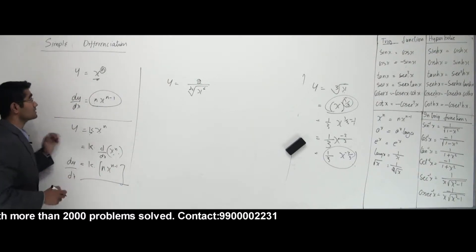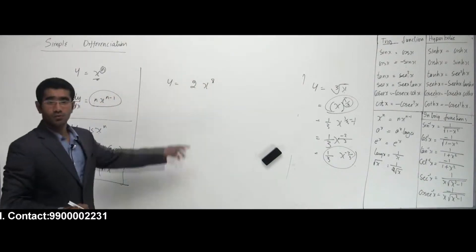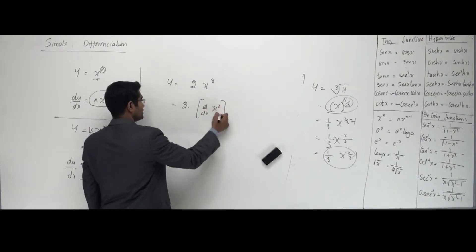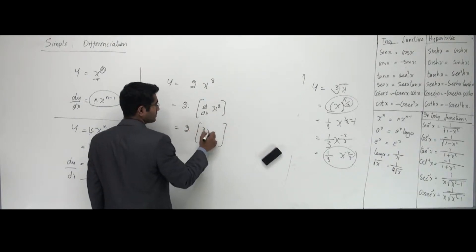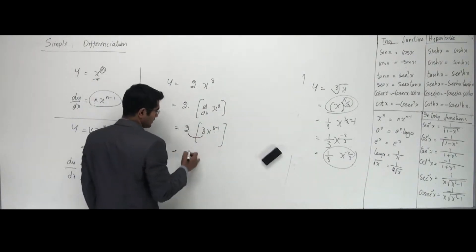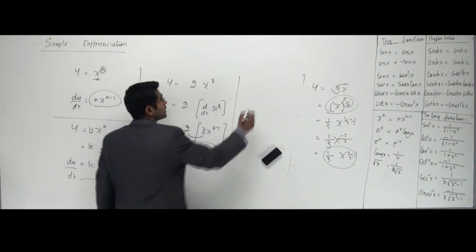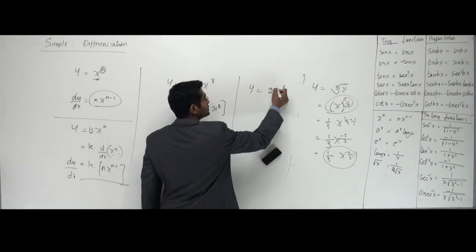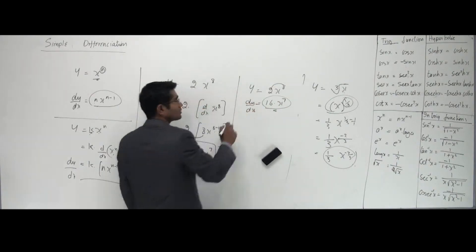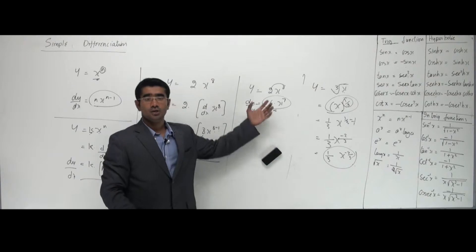If a number is connected with x, just keep it outside and differentiate. For example, y equals 2 into x to the power 8 — I keep the 2 outside and differentiate x to the power 8. That gives 2 times 8 into x to the power 7, which is 16x to the power 7. A direct shortcut: for y equals 2 times x to the power 8, multiply the coefficient and the power to get 16, then reduce the power by 1 to get 7. That's your answer directly.